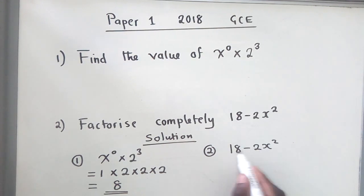Two is found in both terms and can go into 18. Write two outside, then we'll say: two into 18 is 9, minus two into x² is just x². The 2s cancel.